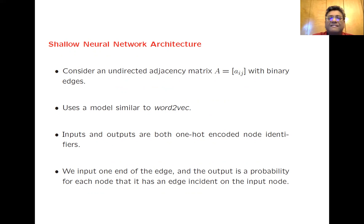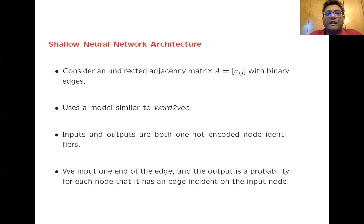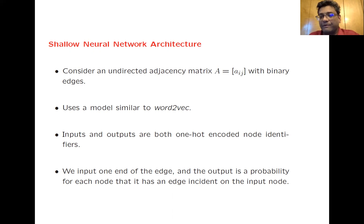We'll discuss the simplest case where we have an undirected adjacency matrix A = Aij with binary edges. Each Aij is a zero-one value. So you have a square matrix, n×n, where n is the number of nodes, with zeros and ones depending on whether an edge exists between a pair of nodes. It's undirected, which means that if Aij is one, then Aji also has to be one.